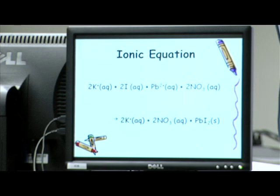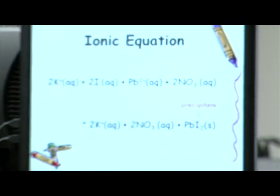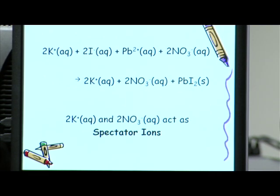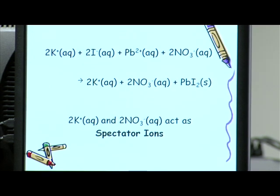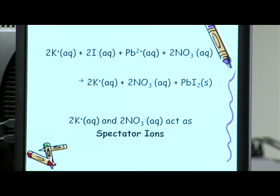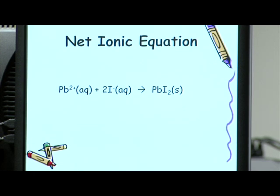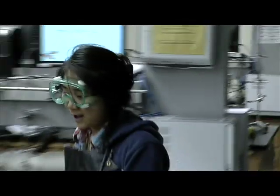For the ionic equation, you can see that lead iodide is the precipitate. Since 2K+ and 2NO3- are present on both the reactant and product sides, they act as spectator ions and we cancel them. As a result, the net ionic equation shows Pb2+ plus 2I- yielding lead iodide.